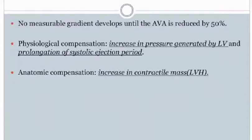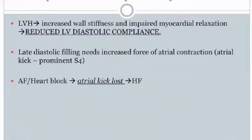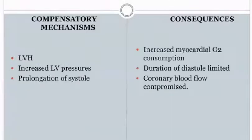No measurable gradient develops until the aortic valve area is reduced by 50%. Physiological compensation involves increased pressure generated by the left ventricle and prolongation of the systolic ejection period; anatomic compensation is by increase in contractile mass. Due to LV hypertrophy, there is increased wall stiffness and impaired myocardial relaxation, reducing LV diastolic compliance. Late diastolic filling requires increased atrial contraction force, producing a prominent S4 — the atrial kick. In patients with atrial fibrillation and heart blocks, this atrial kick is lost and they rapidly progress to heart failure.